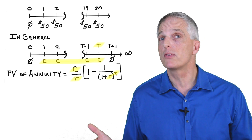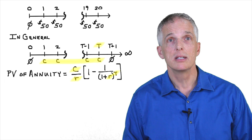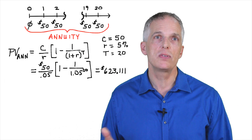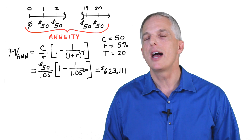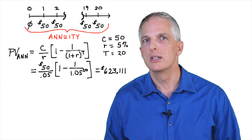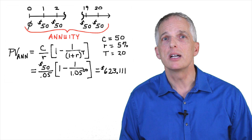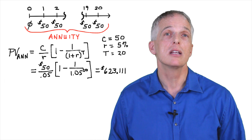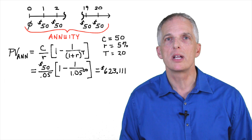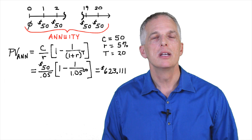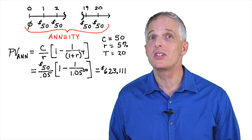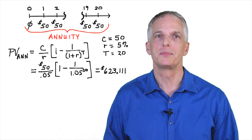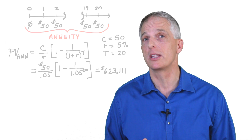In general, an ordinary annuity can be valued with the following formula: C divided by R, times the quantity 1 minus 1 over (1 plus R) raised to the power of T. Note that there are three required inputs: C the periodic cash flow, T the number of periods over which the cash flow is paid, and R the interest rate used to value the annuity. Of course, we could use the annuity formula to value our lottery win.